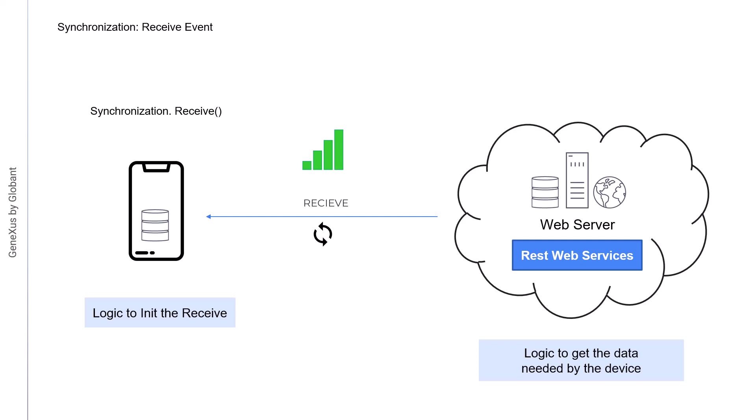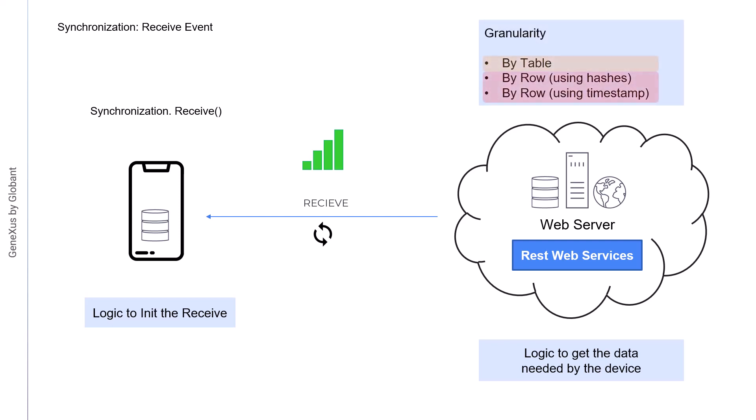The synchronization behavior can be configured using certain criteria that determine when the synchronization will be made to receive data. The synchronization can be done in two ways, by table or by row. When this granularity is set by table, all the tables changed since the last synchronization are sent to the device. When it's set by row, only those records changed in each table since the last synchronization are sent to the device. There are two mechanisms, one that uses hashes and another that uses timestamp. Next, we'll look at each of these mechanisms and their differences.